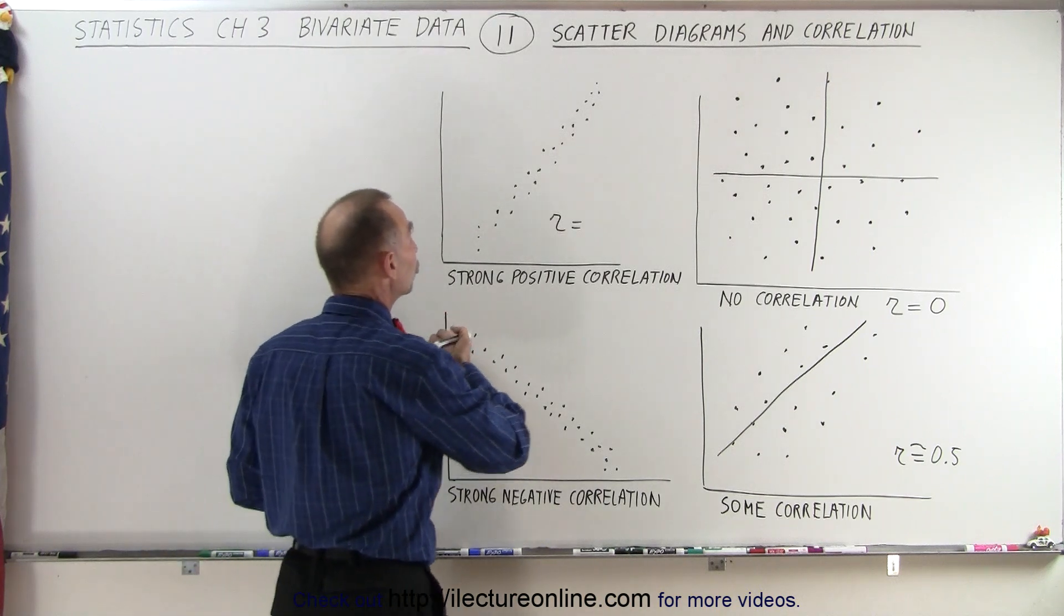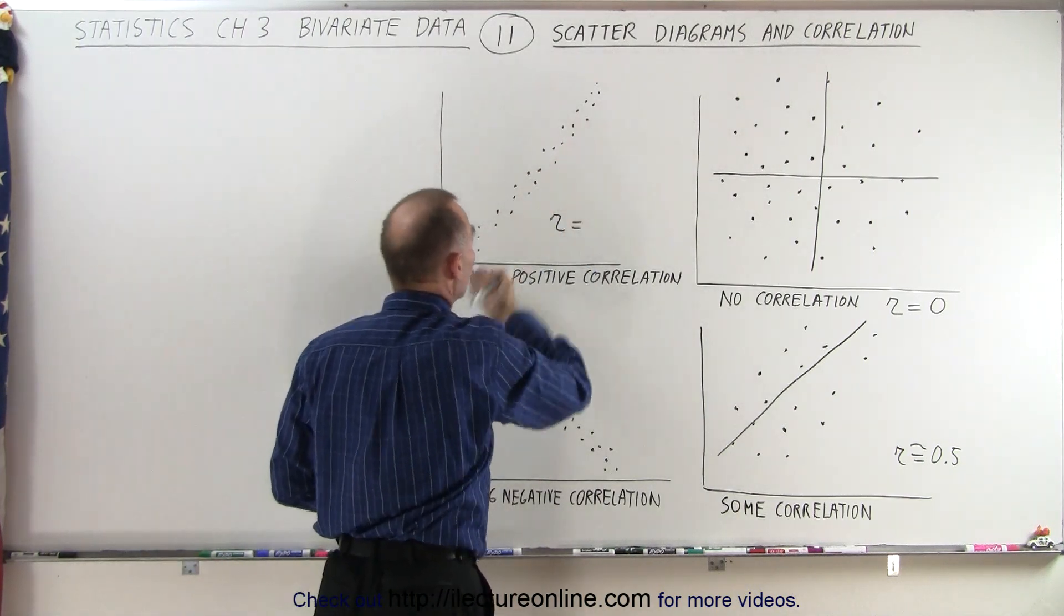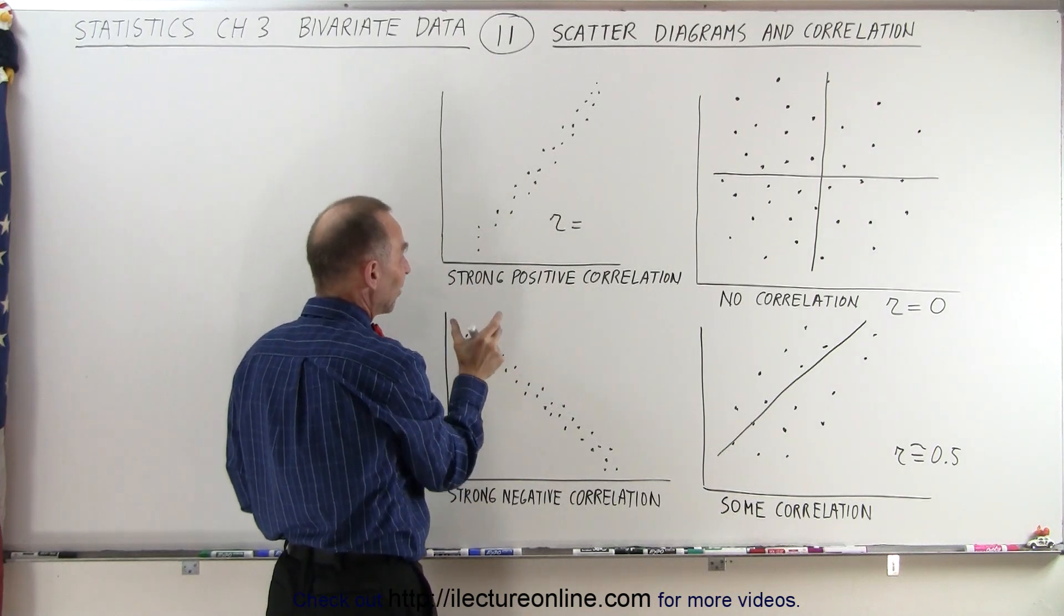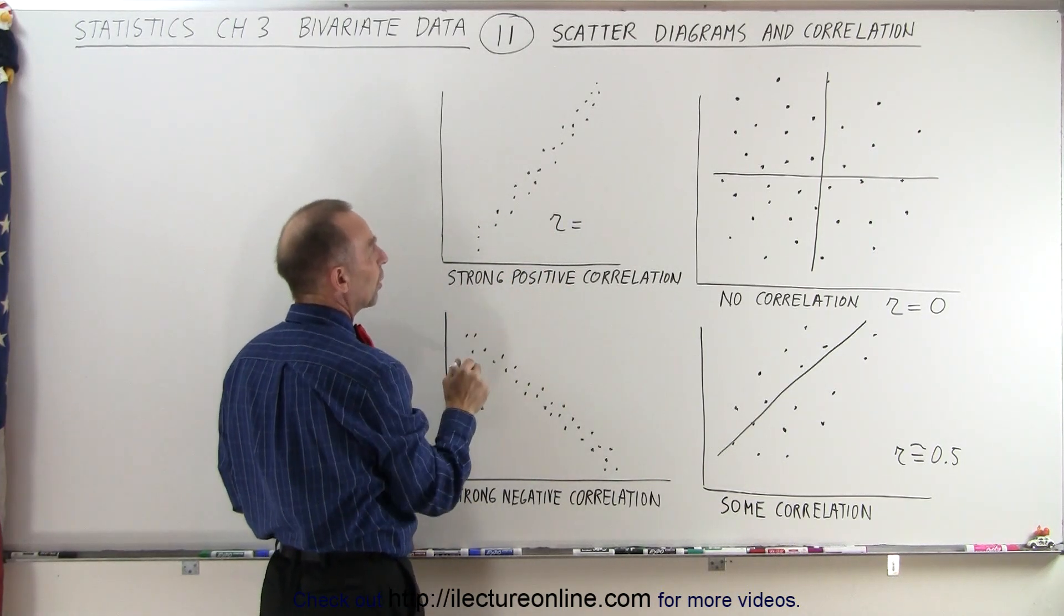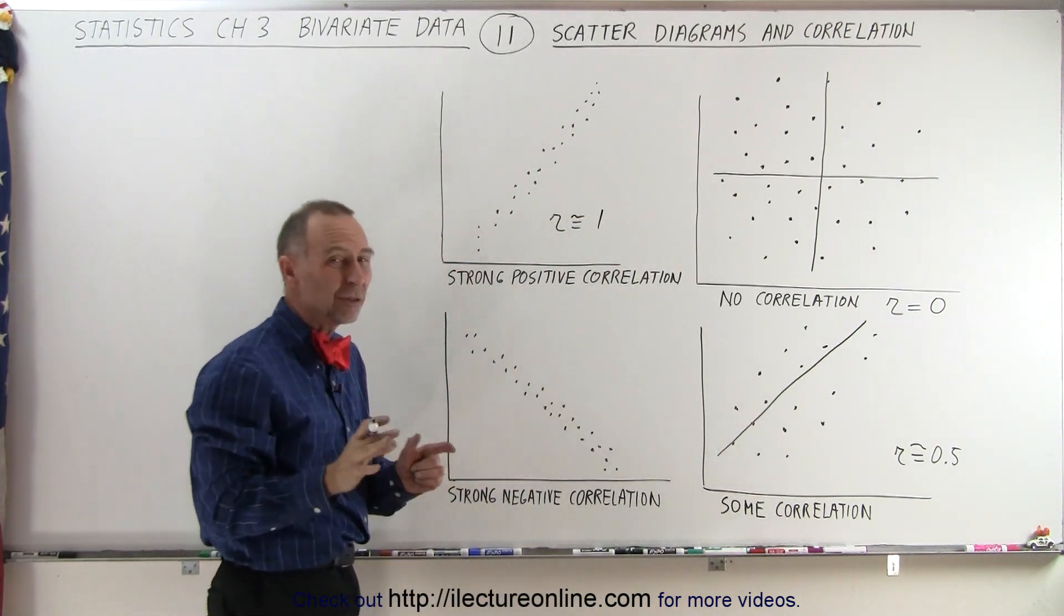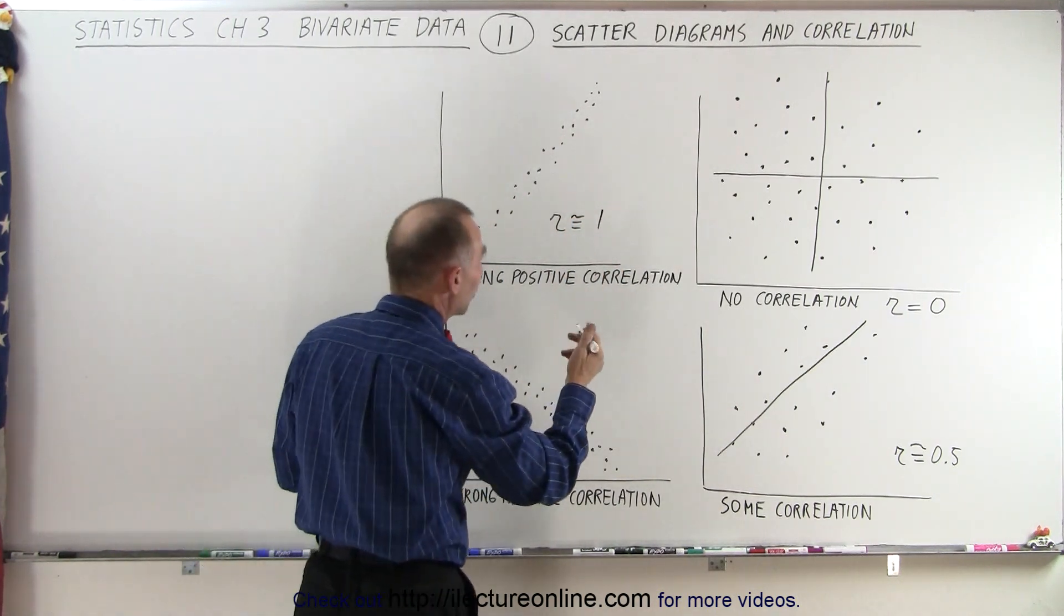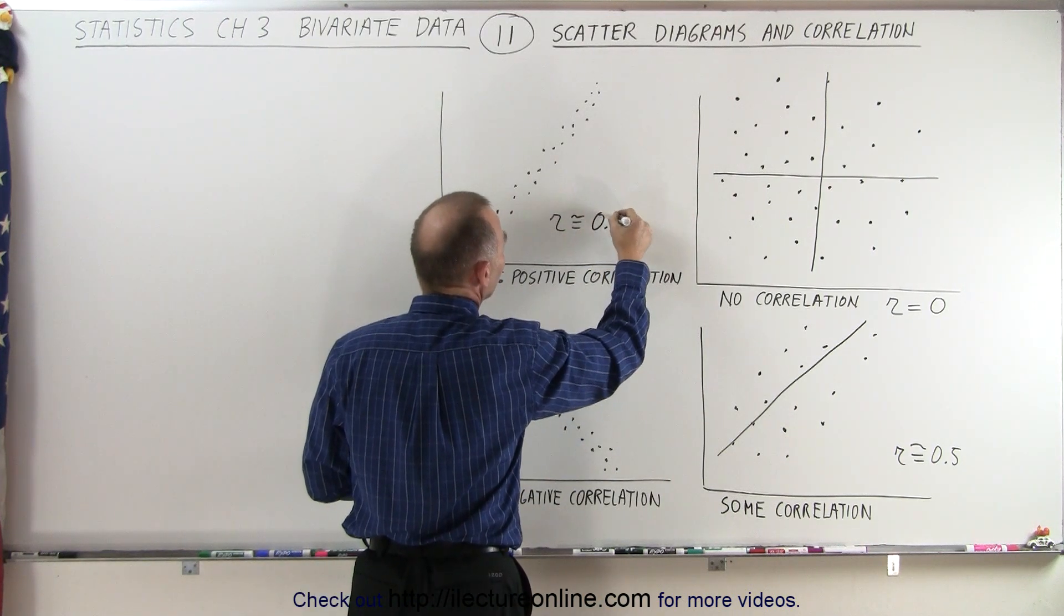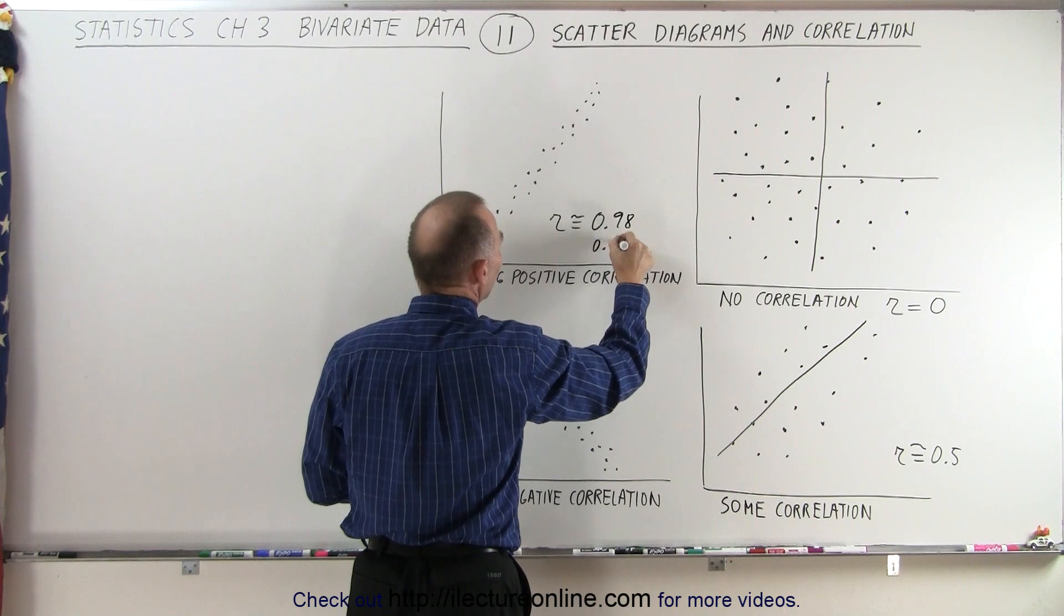Now here we can see that there's a much stronger correlation between the horizontal versus the vertical data set, so we can say that there's a strong positive correlation, and r will be approximately equal to positive 1, probably just slightly below, maybe 0.9 or 0.8. I should say maybe 0.98 or 0.95 or something like that.